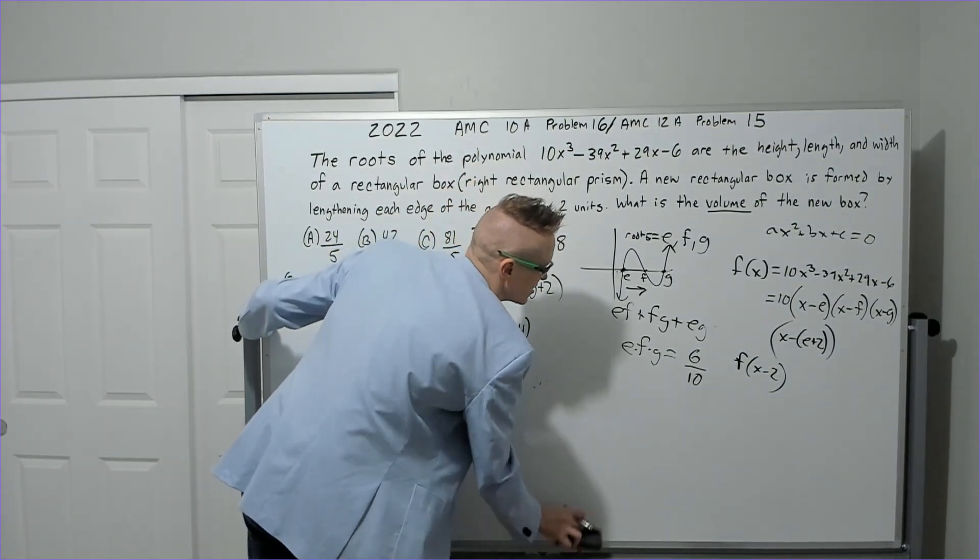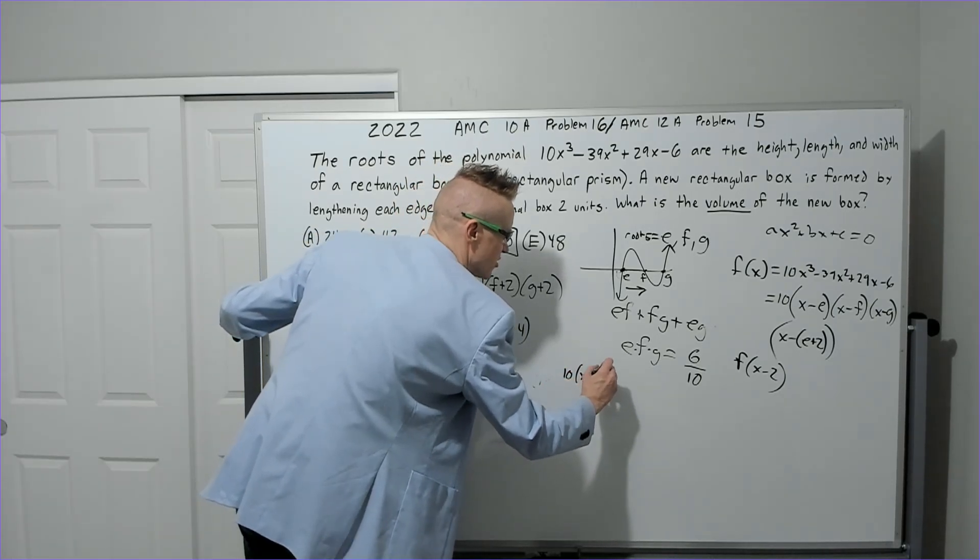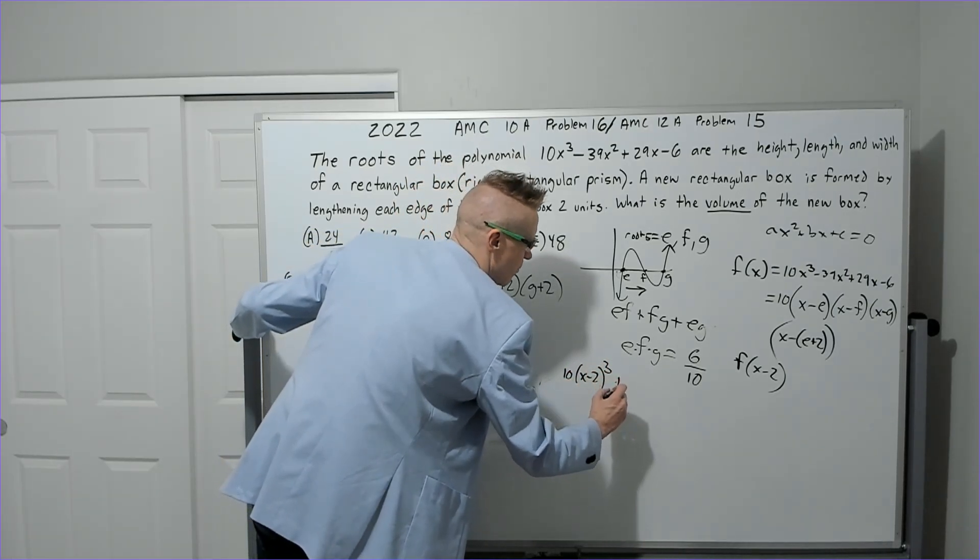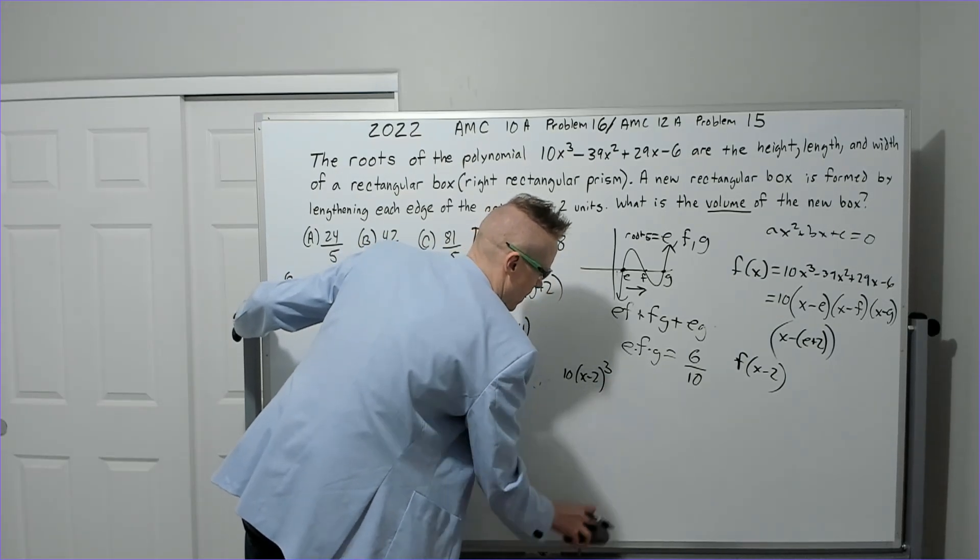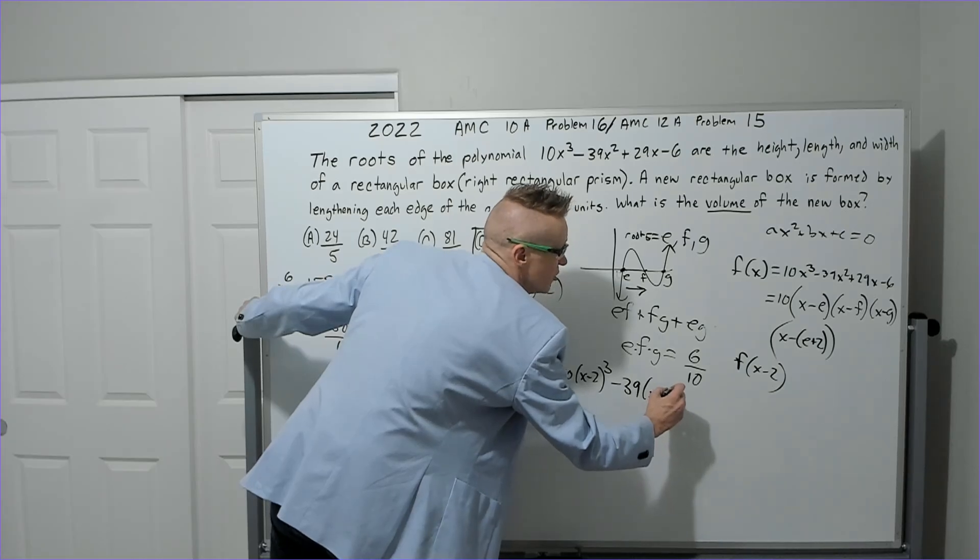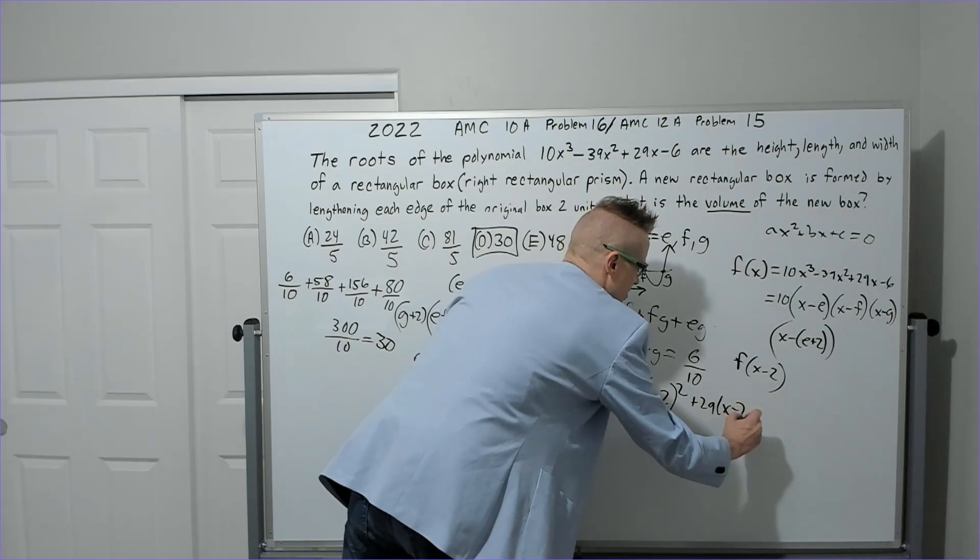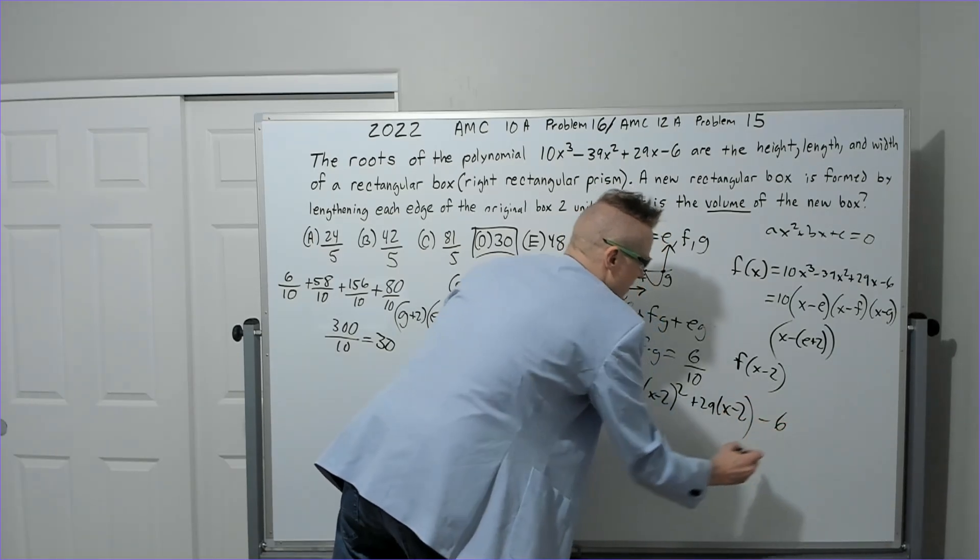You know, when you think about it, let's just do it as is. So you're going to have 10(x - 2)³ - 39(x - 2)² and then + 29(x - 2) and then - 6.